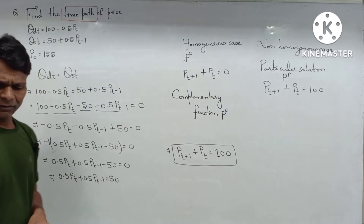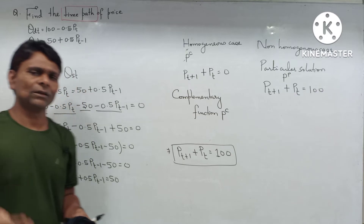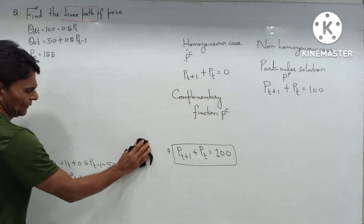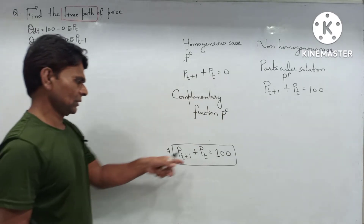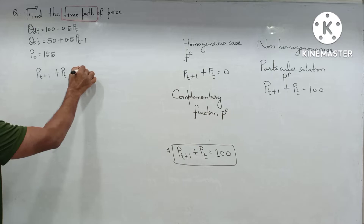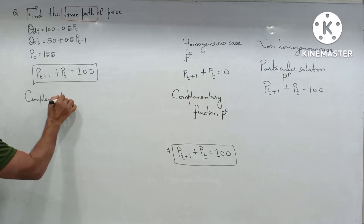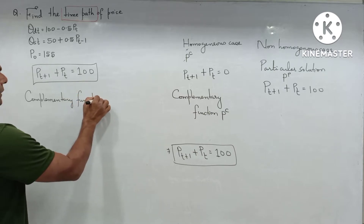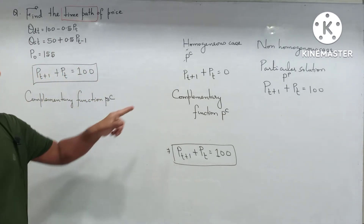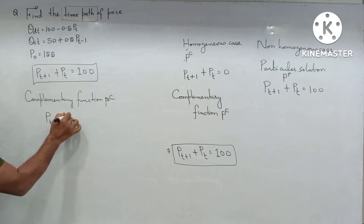We need to get the complementary function as well as the particular solution in order to have the general solution of this first-order difference equation. The equation is p(t+1) + p(t) = 100. For the complementary function p_c, it is obtained from the homogeneous case. Write down the homogeneous case: p(t+1) + p(t) = 0.